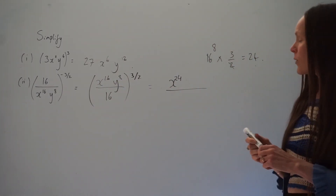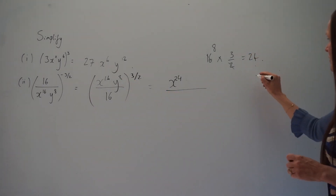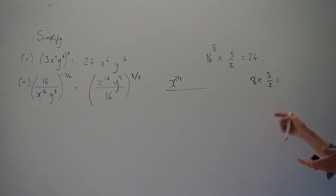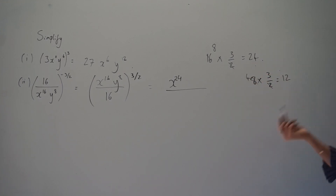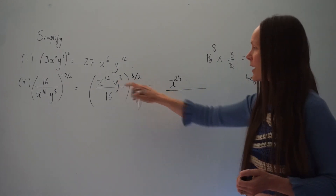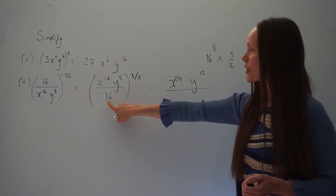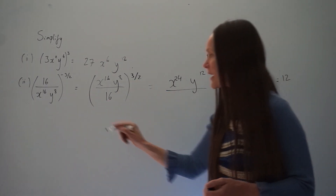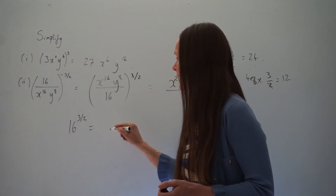For the y value, we're multiplying 8 by 3 over 2. Since 8 divided by 2 is 4, and 4 multiplied by 3 is 12, the new power for y is 12. All that's left is to work out 16 raised to the power of 3 over 2. You can put this in your calculator and it gives you 64.